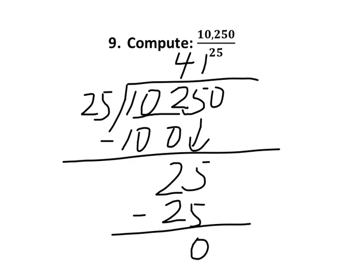However, 41 is not the answer, right? We still have a zero from the dividend, so you're going to copy that zero, put in your quotient. So the final answer should be 410.